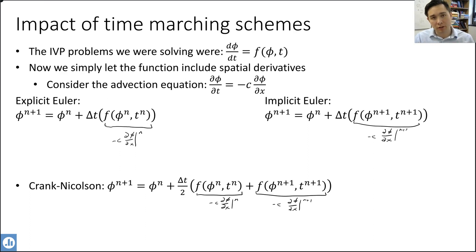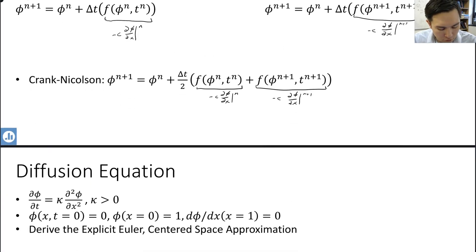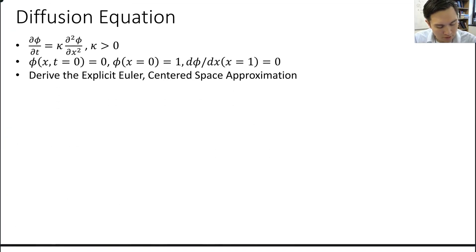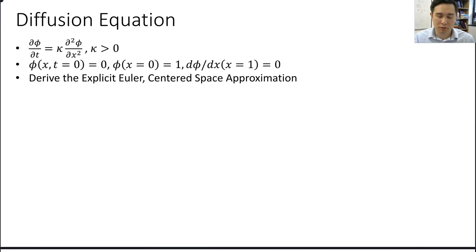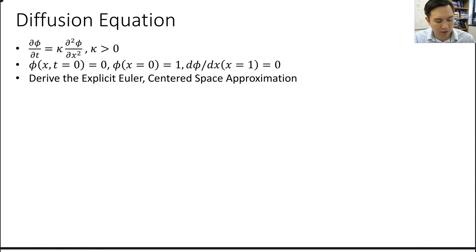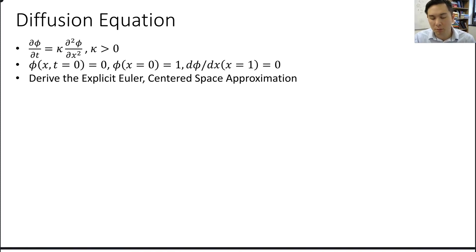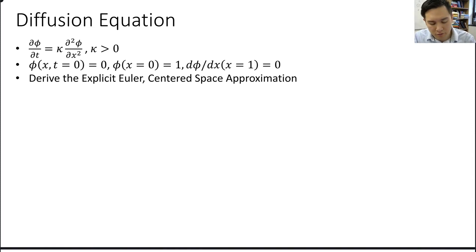We're going to move on to consider the diffusion equation. The diffusion equation, or heat equation, is d phi/dt equals kappa times d² phi/dx². For this equation we need two boundary conditions. An initial condition: phi at t=0 equals 0 uniformly. One boundary condition: phi at x=0 equals 1. The other is a Neumann boundary condition: d phi/dx at x=1 equals 0 for all time.